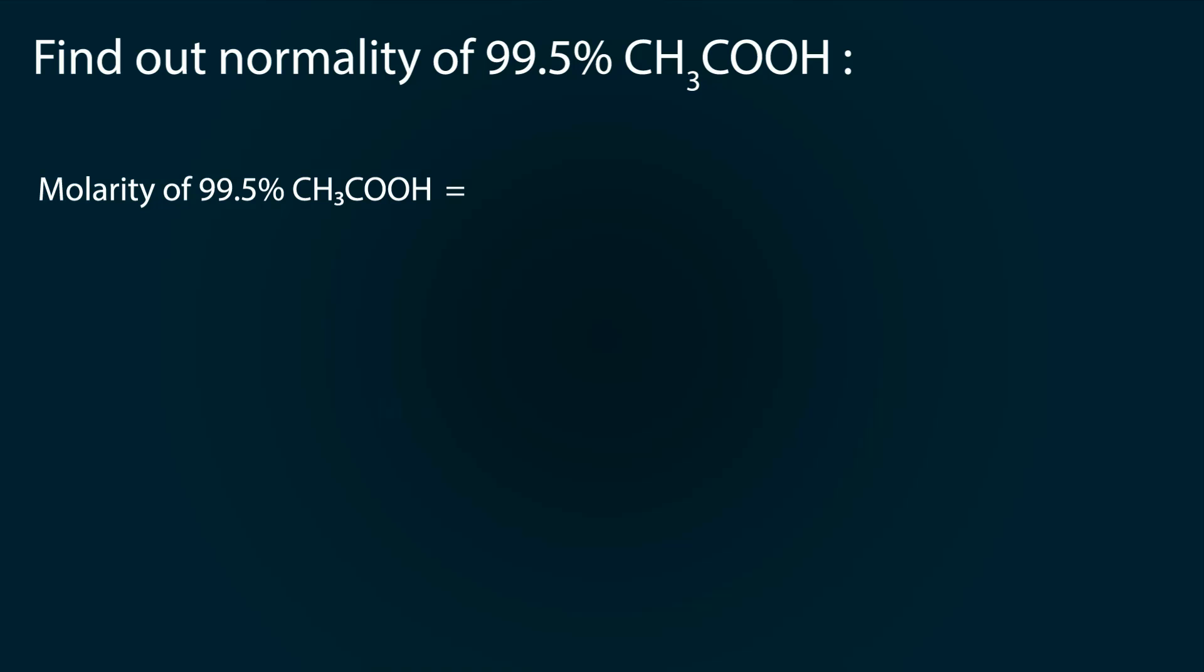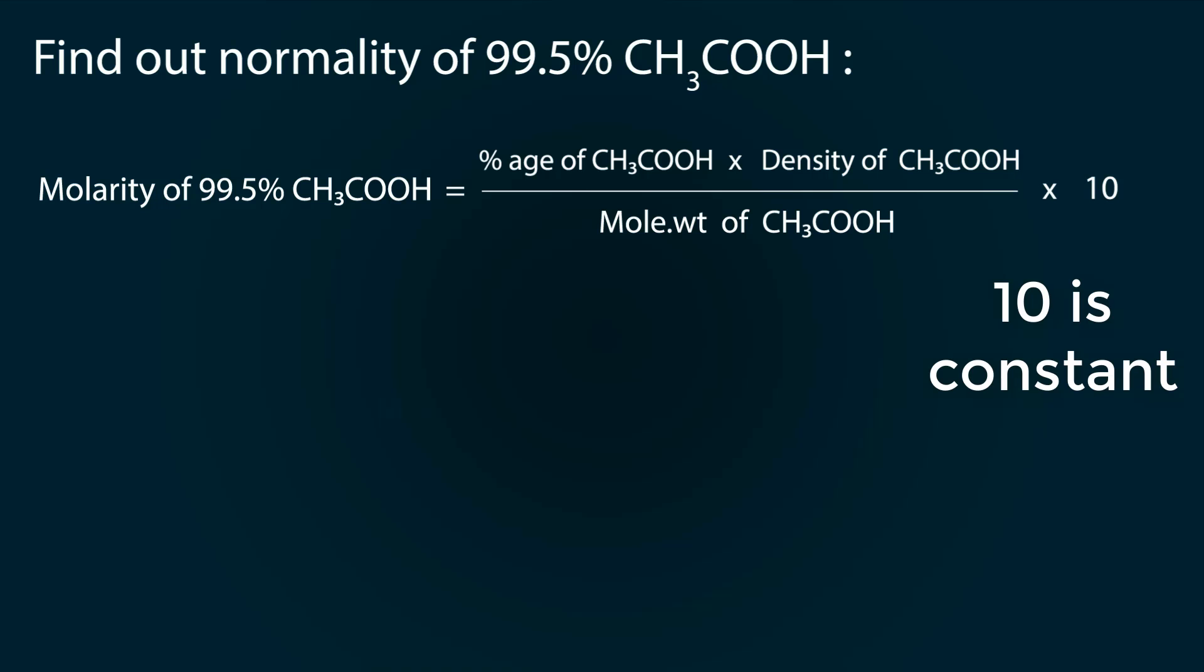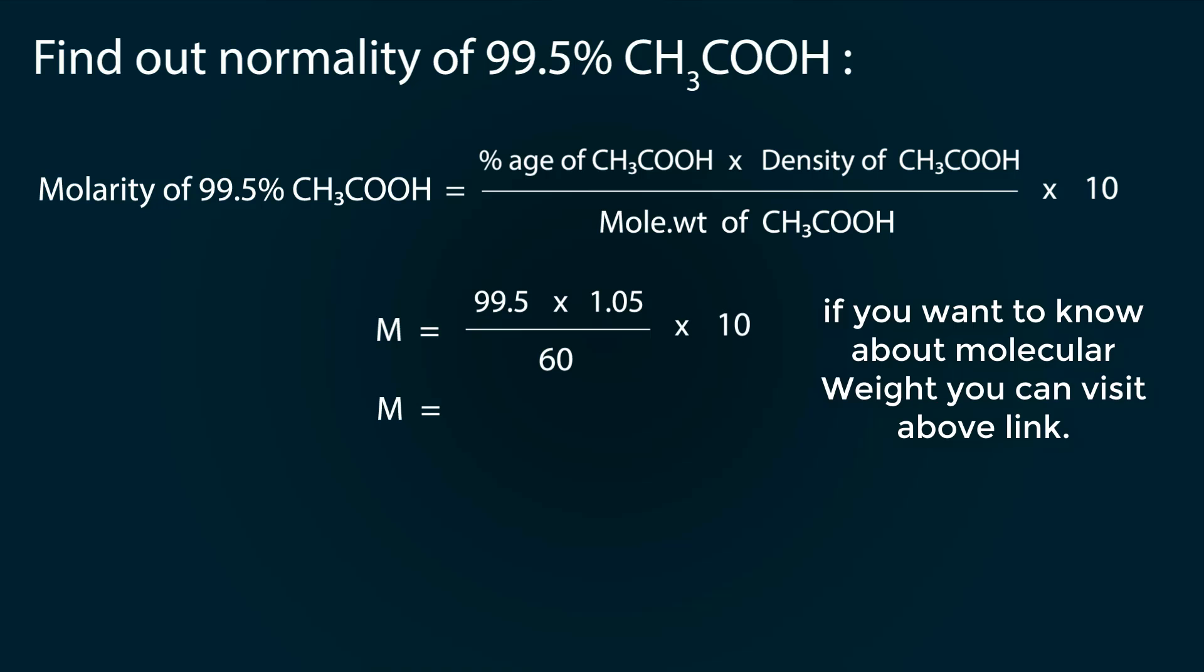Let's do some calculations. First we have to find out the normality of 99.5% acetic acid, but before that let's find out molarity. Molarity equals percent times density divided by molecular weight times 10. So the percent is 99.5, density is 1.05, and the molecular weight is 60.